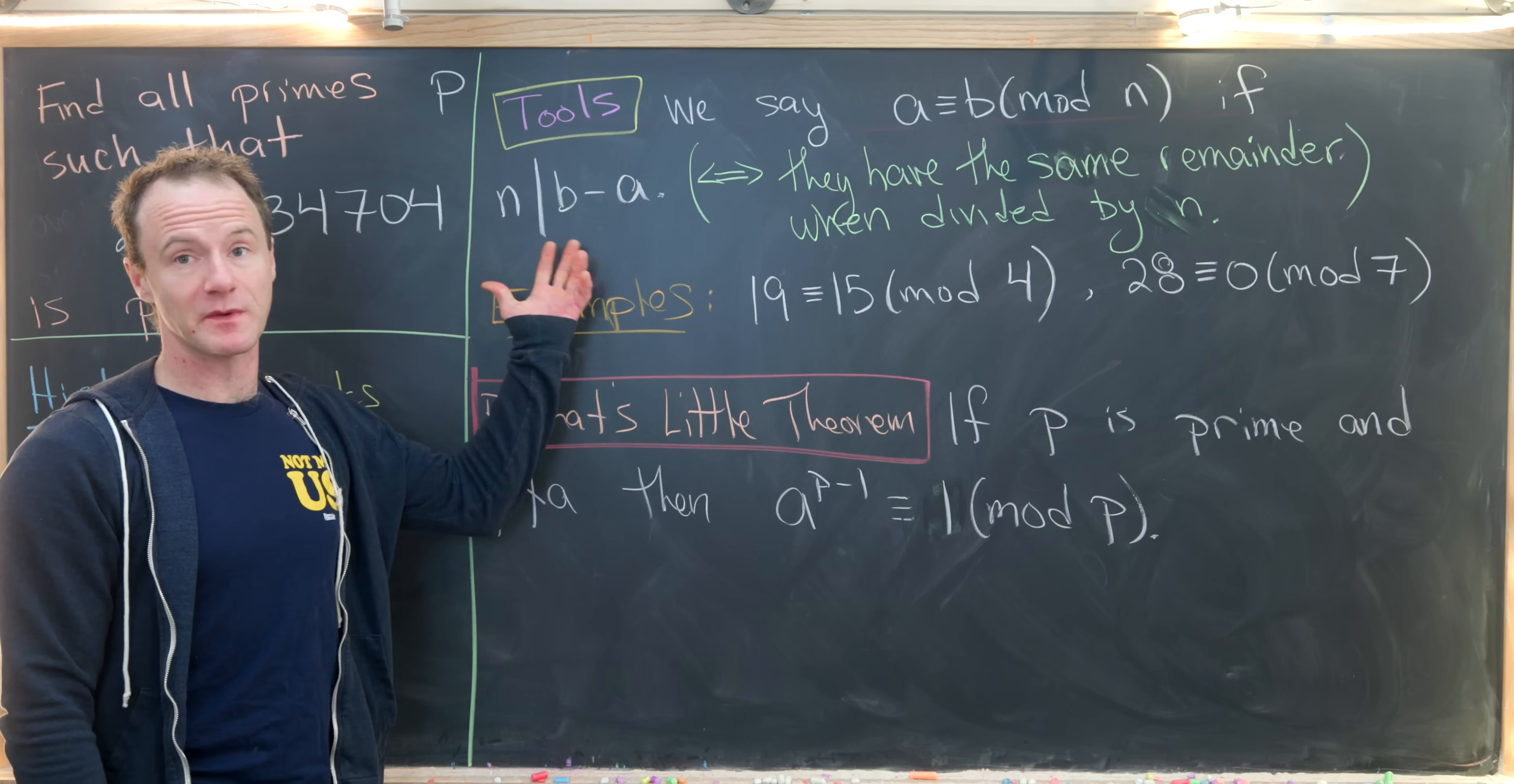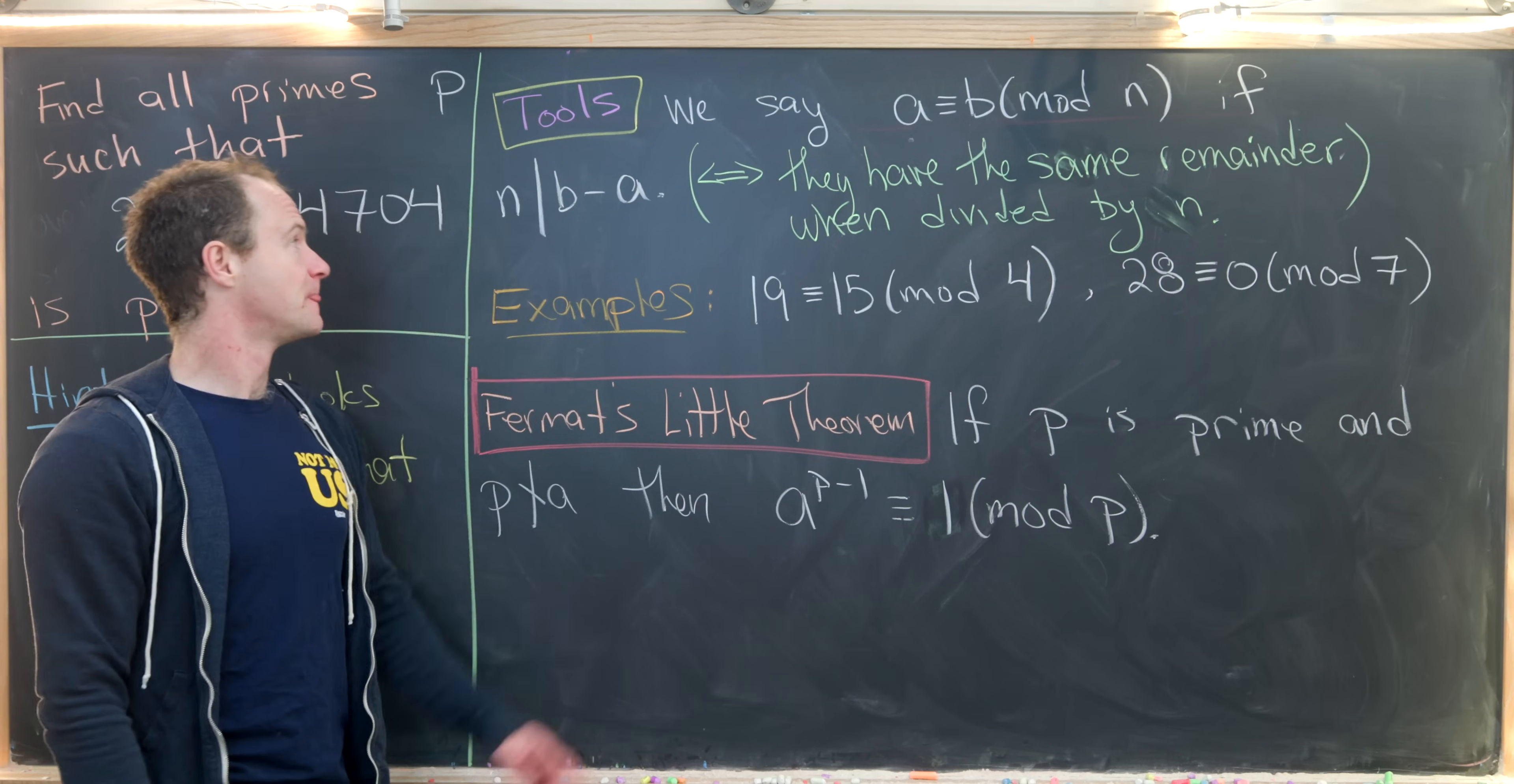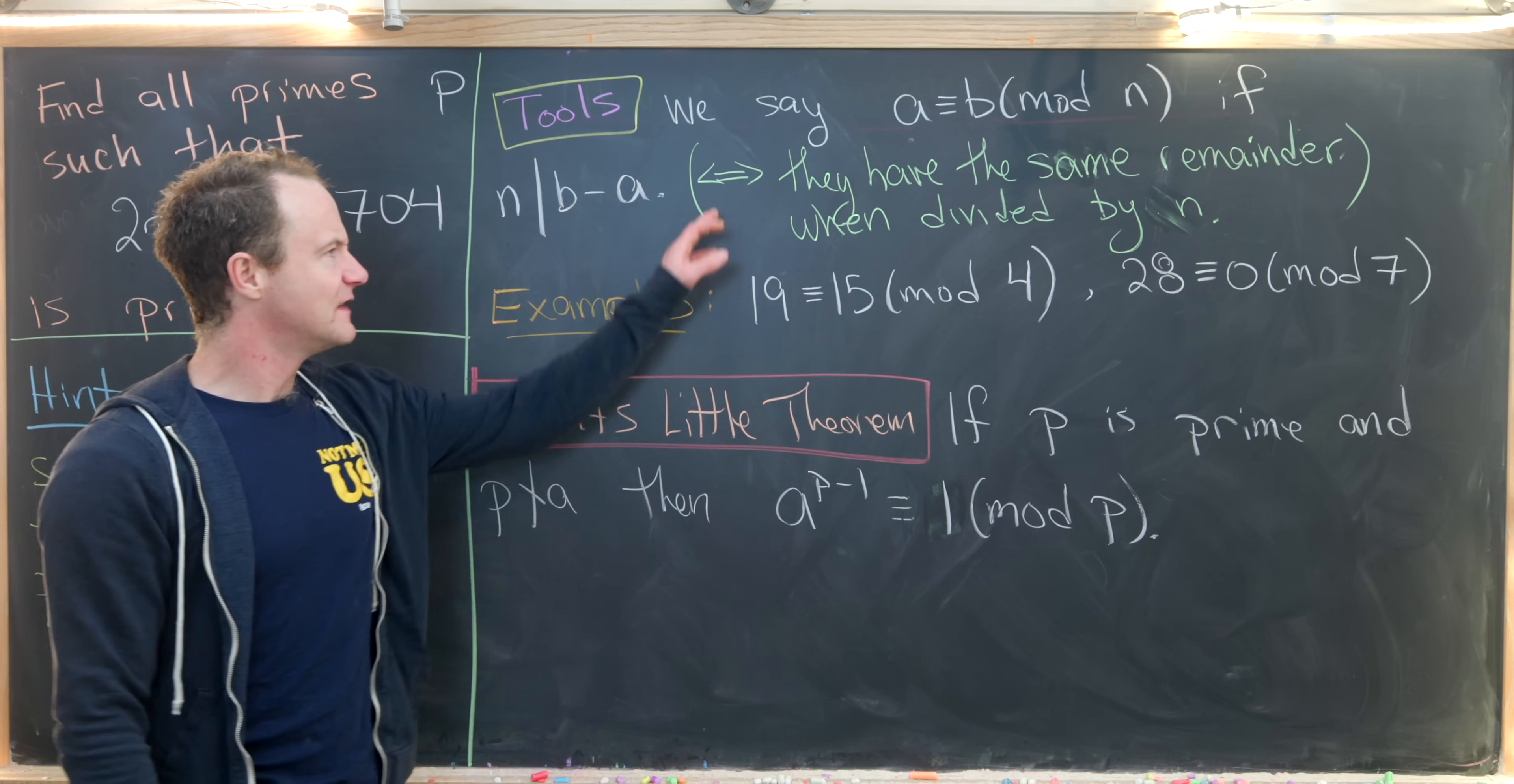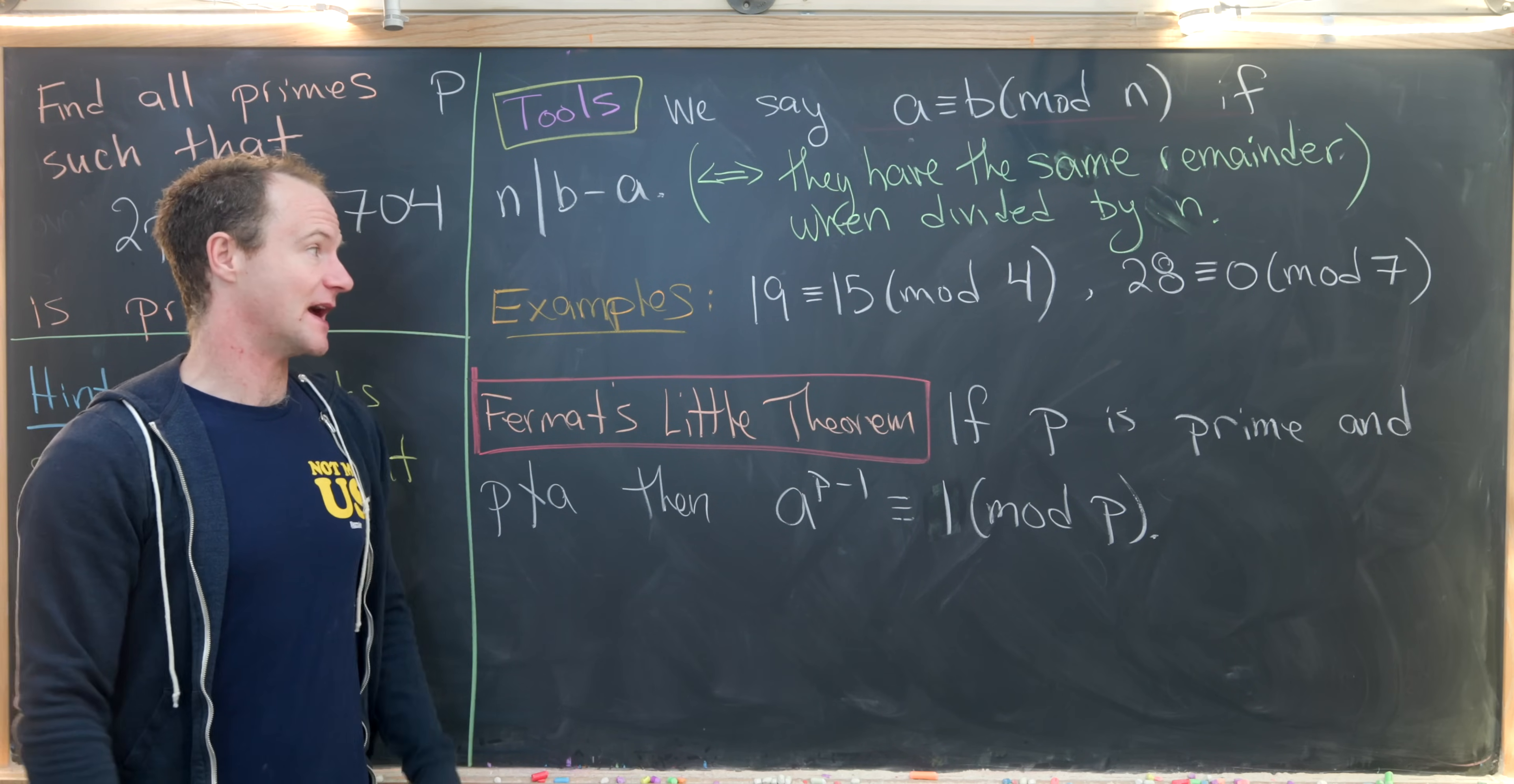So let's first remember a definition. We say that a is congruent to b mod n if n divides b minus a. And this is equivalent to a and b having the same remainder when divided by n.